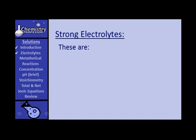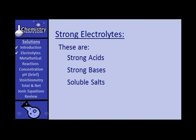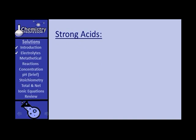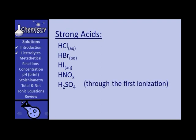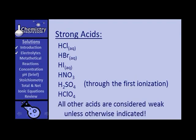What are strong electrolytes? They are strong acids, strong bases, and soluble salts. The strong acids are a list you need to memorize: hydrochloric acid, hydrobromic acid, hydroiodic acid, nitric acid, sulfuric acid — which is a strong acid only through the first dissociation; the second part is weak — and perchloric acid. There are some other strong acids, but we're not likely to run into them. All other acids are considered weak unless otherwise indicated.